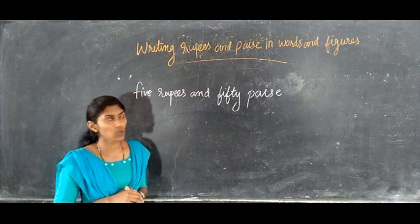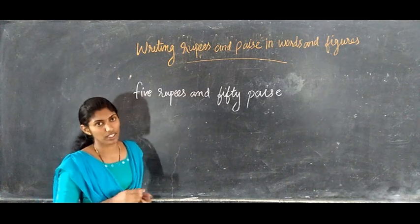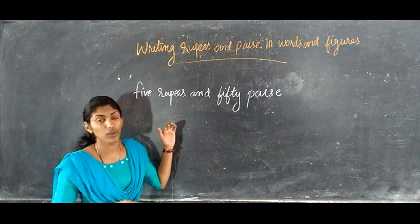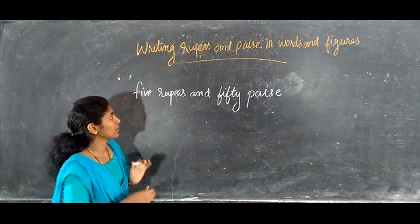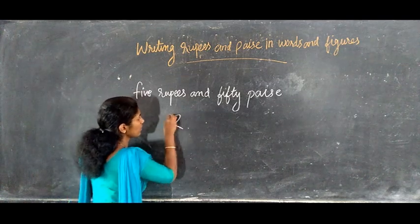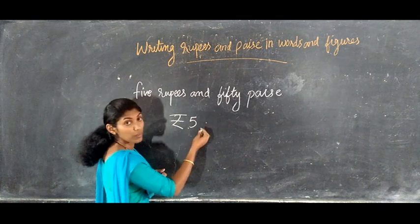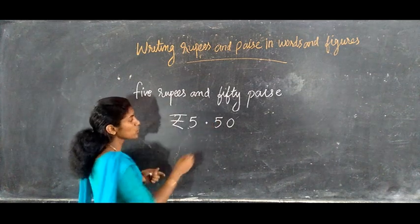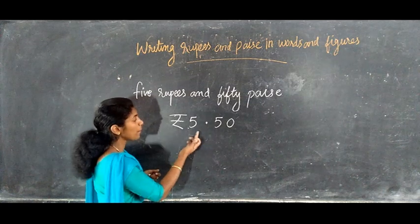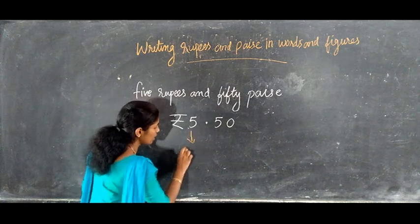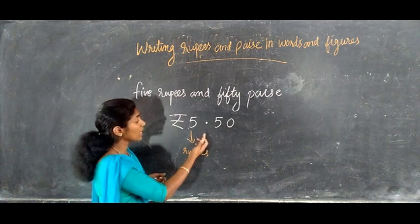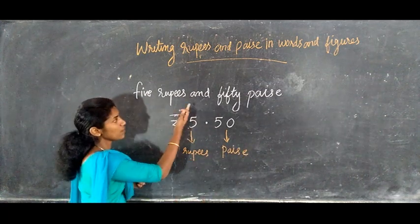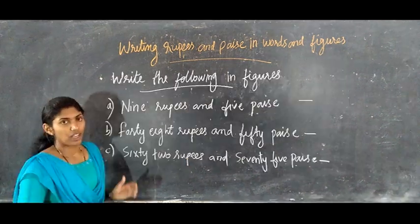Moving to the next topic: writing rupees and paisa in words and figures. Suppose you have 5 rupees and 50 paisa — how will you write this in figures? We use the rupee symbol, then write 5, then put one dot to separate the rupees and paisa, then write 50. So the number on the left side of the dot denotes rupees and the number on the right side denotes paisa. So 5 rupees and 50 paisa is written as ₹5.50.